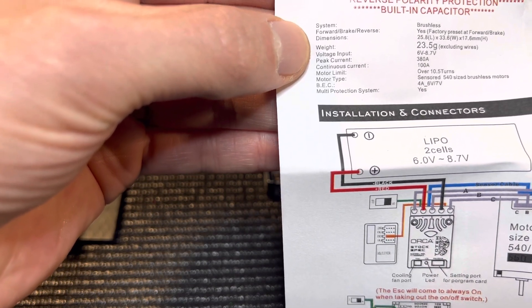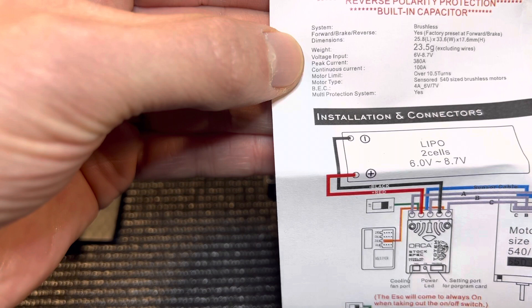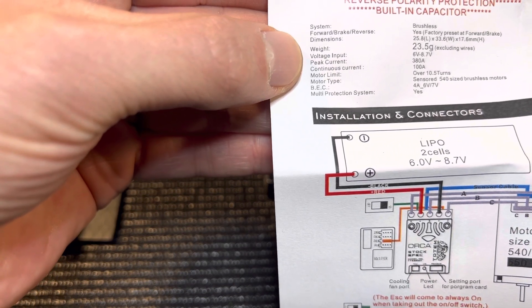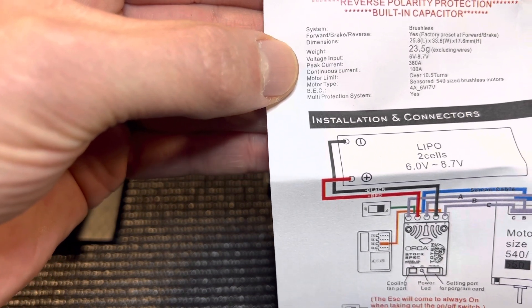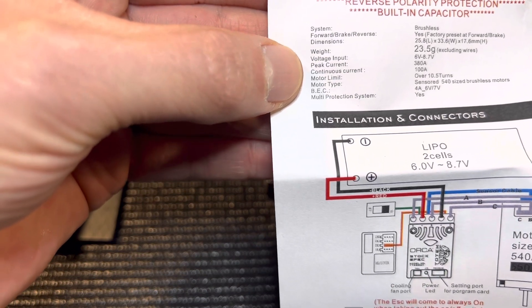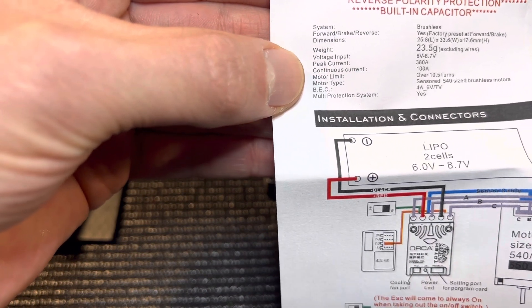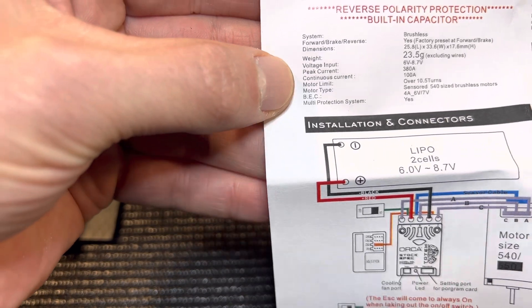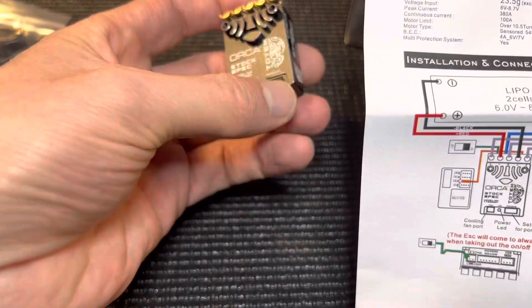Weight 23.5 grams, voltage 6 volt to 8.7 volt, peak current 380 amps, continuous 100. Motor limit 10 and a half, so remember I was saying earlier for like stock class.